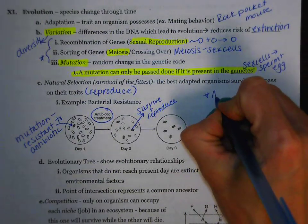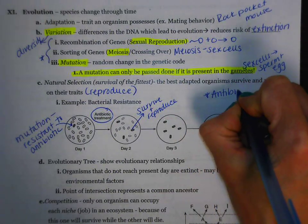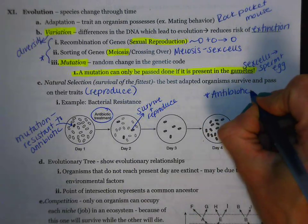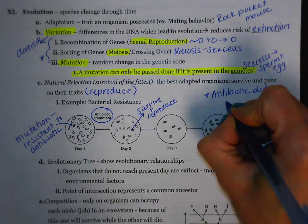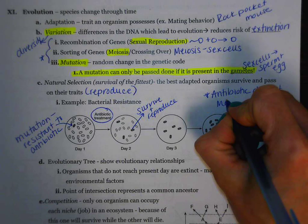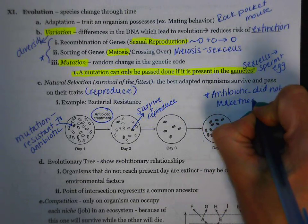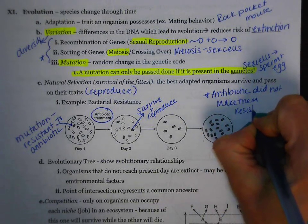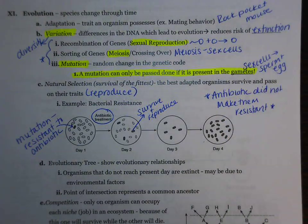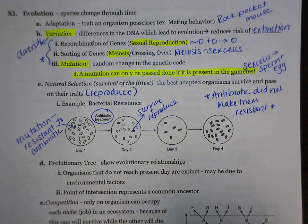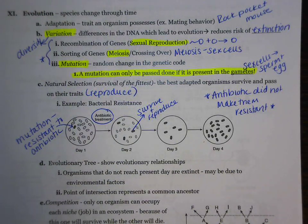Now remember, the antibiotic did not cause it — it did not make them resistant. Instead, before the antibiotic was ever applied, they had a gene mutation, and that gene mutation allowed them to survive and reproduce.